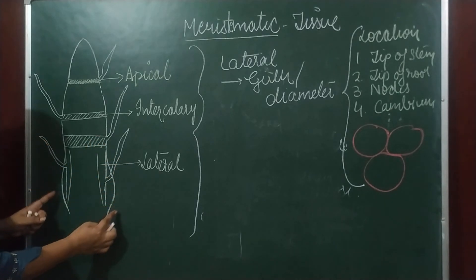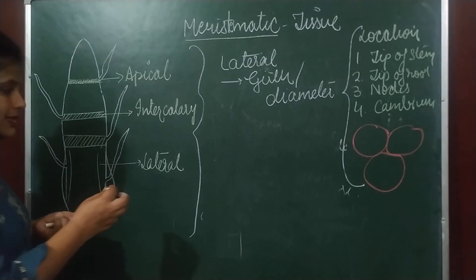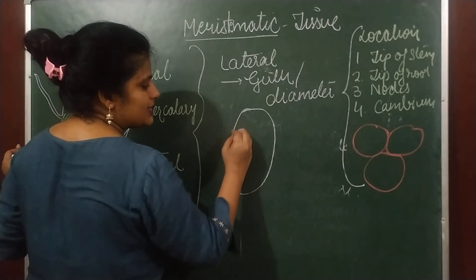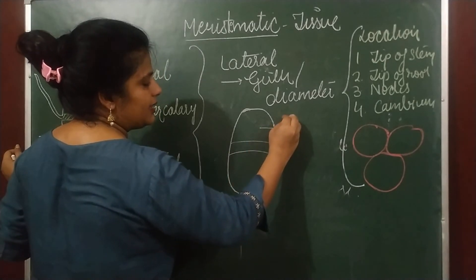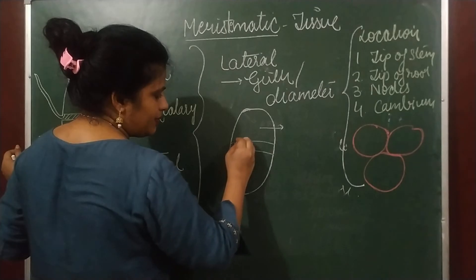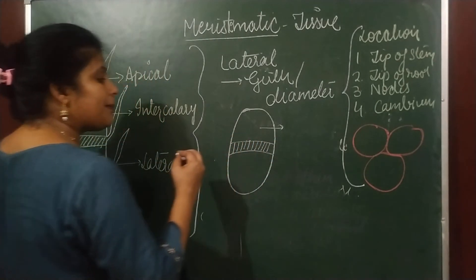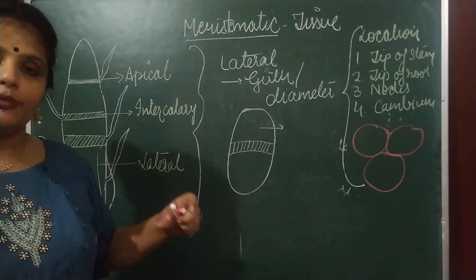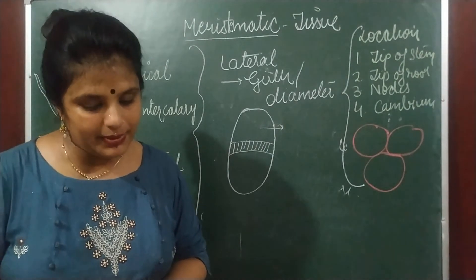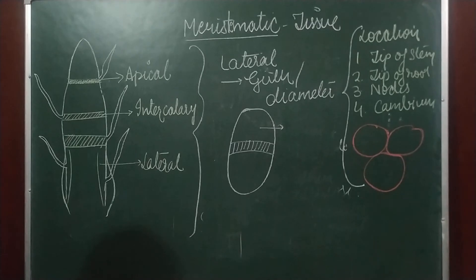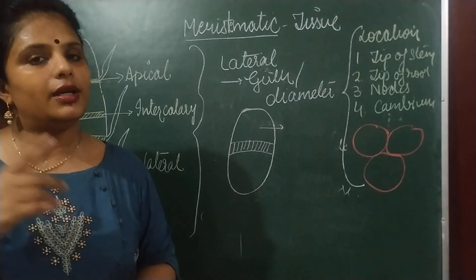Lateral meristematic tissue is responsible for girth — for increasing the thickness and diameter. If we look at the position of the vascular bundle, xylem and phloem are present, and in between the xylem and phloem there is a cambium — this is the lateral cambium. This lateral cambium is responsible for the girth, for increasing the diameter. So by this, we have discussed meristematic tissue, and we are going to revise simple tissue in the next video.